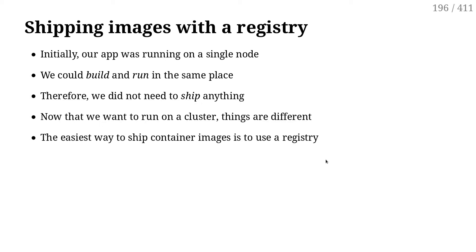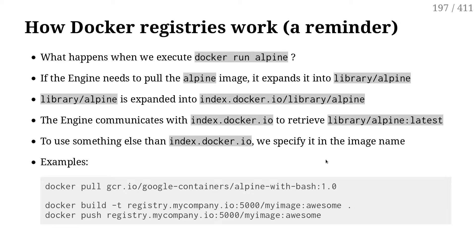The easiest way to ship the images will be by using a container registry, because once the images are on a registry, I just need to reference them. This loops on the question that was asked earlier — where does Alpine come from when I do 'docker run Alpine' or 'kubectl run --image Alpine'? It gets expanded to 'library/alpine', which itself gets expanded to 'index.docker.io/library/alpine'. Then when the Docker engine needs to create that container, it communicates with the registry, pulls the image, and creates the container.